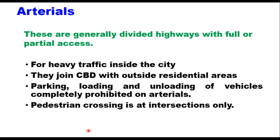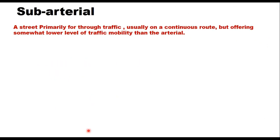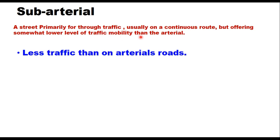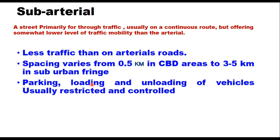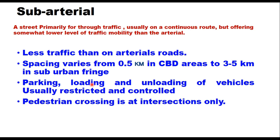Sub-arterials are functionally similar to arterials but with a somewhat lower level of travel mobility. This is a street primarily for through traffic, usually on a continuous route, but offering a somewhat lower level of traffic mobility than the arterial. They carry less traffic than arterials, and spacing varies from 0.5 km in CBD areas to 3.5 km in suburban fringes. Parking, loading, and unloading are usually restricted and controlled on sub-arterials, and pedestrian crossing is at intersections only.